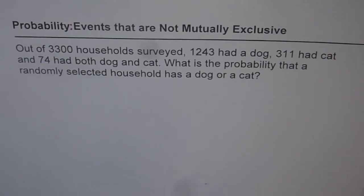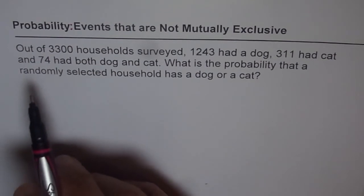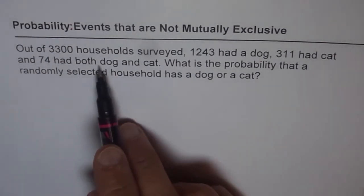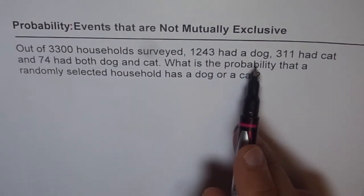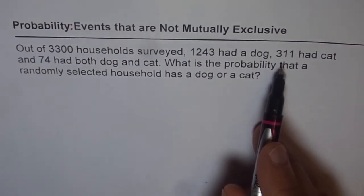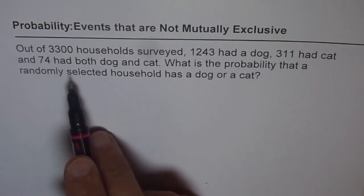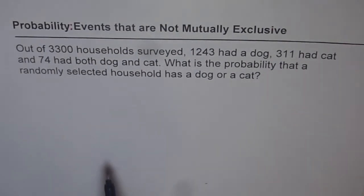Probability: Events that are not mutually exclusive. So here is an excellent example on not mutually exclusive events. The question here is, out of 3,300 households surveyed, 1,243 had a dog, 311 had cat, and 74 had both dog and cat.